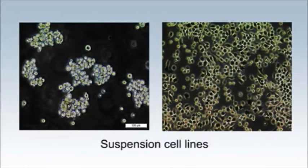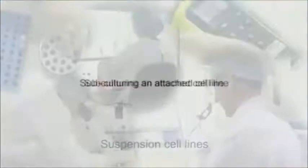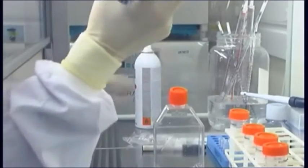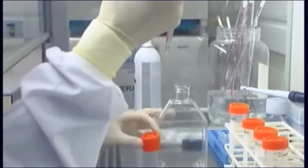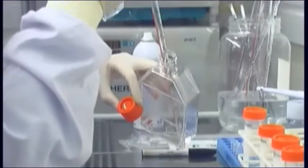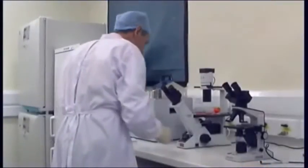Subculturing an attached cell line: To subculture the cells, they need to be in suspension to allow them to be transferred from one container to another and to reduce the cell density.